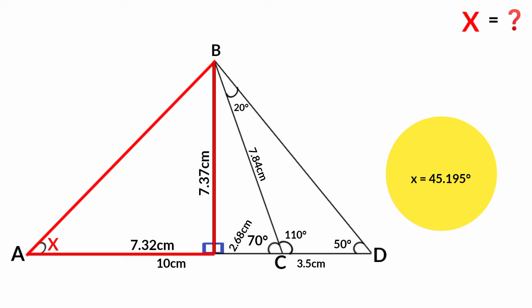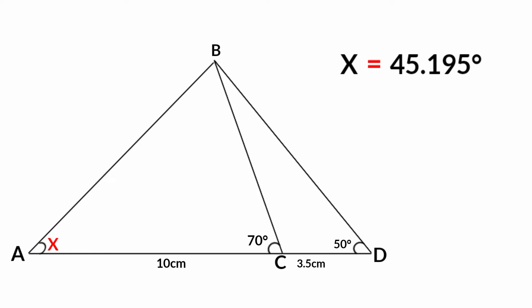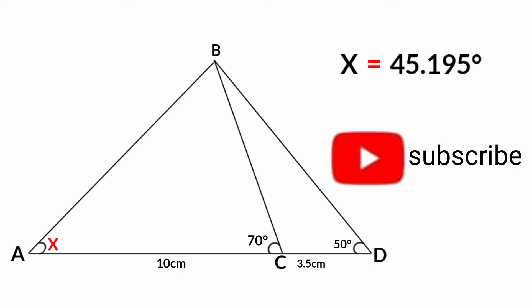So x equals 45.195 degrees, which is almost an isosceles right angle triangle. Thank you for watching. Please don't forget to like, share, and subscribe, and also turn on the notification button for this channel. Thank you.